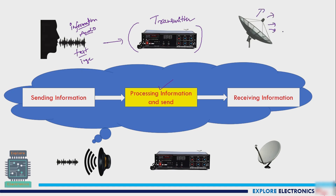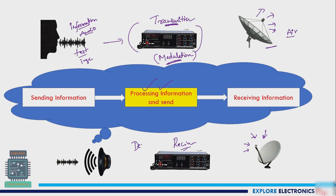This antenna generates signals in air, and a receiving antenna receives whatever signal was transmitted. What the transmitter did, the processing is reversed by a receiver. Here, modulation is the process done at the transmitter, and the receiver performs demodulation. The demodulated signal is then given to the speaker to generate audio — whatever information or audio we sent will be received at the other end.